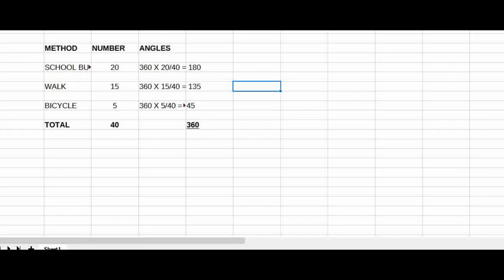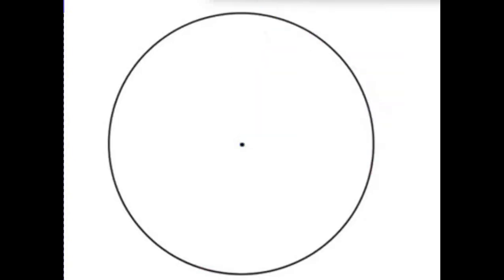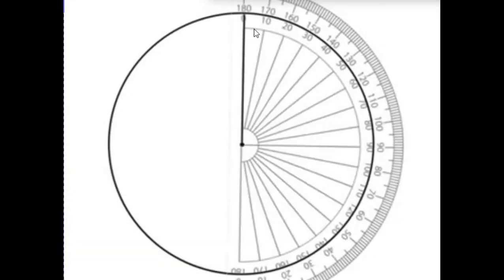If you have a pie chart, you will have a circle. You will have a circle, then you will have a circle. Where do you have a circle? Yes, this is a circle. Okay, this is 180 degrees. I will have a circle.